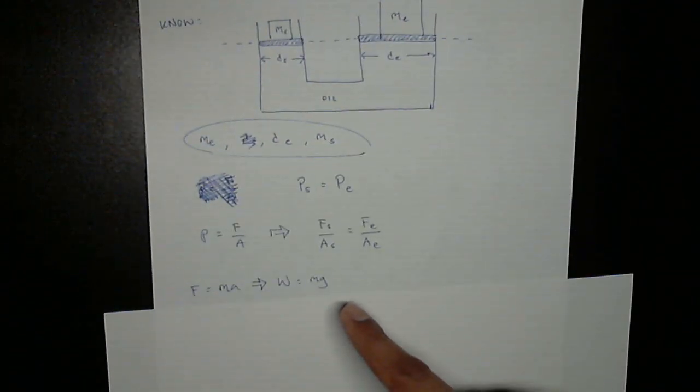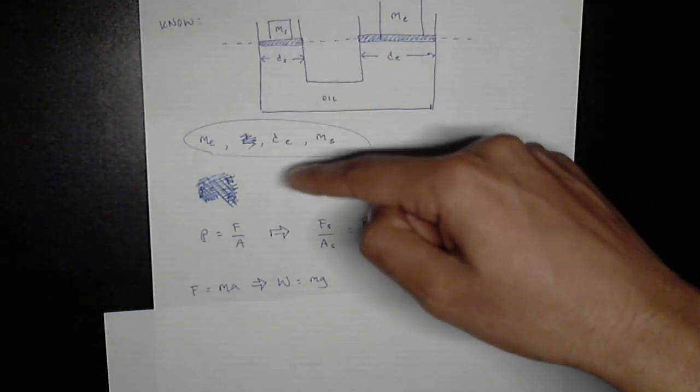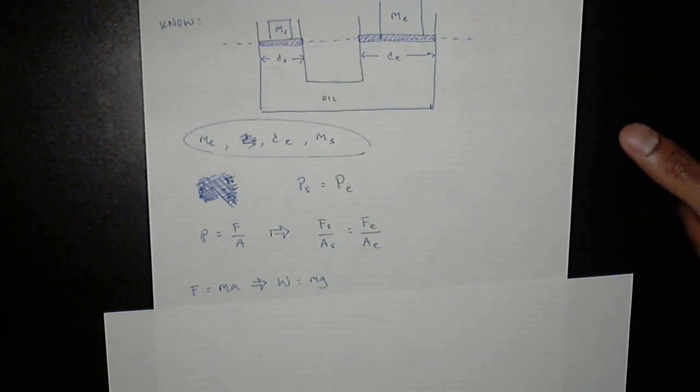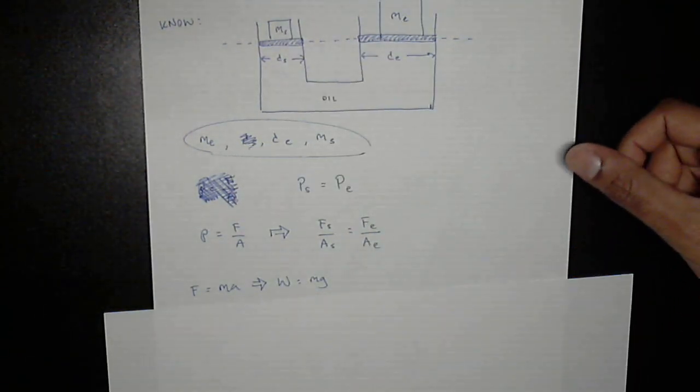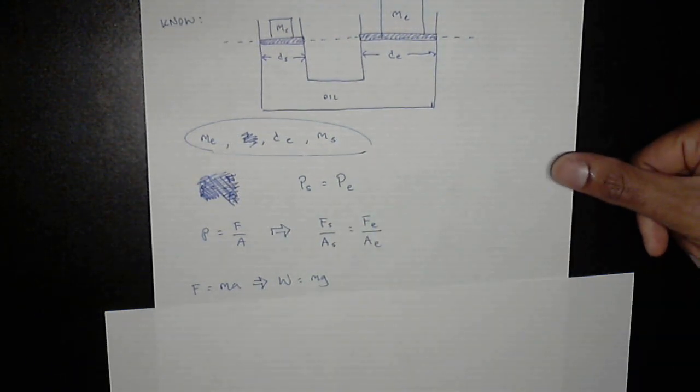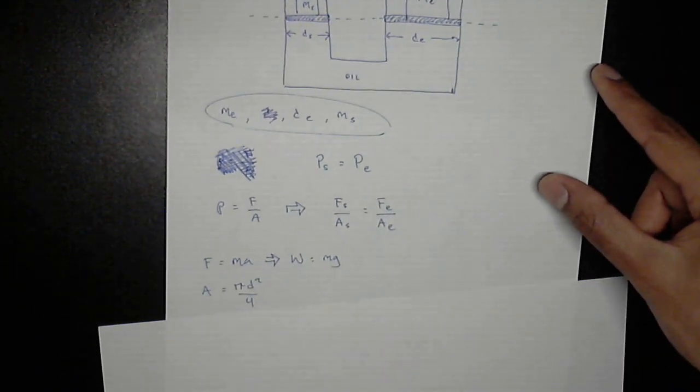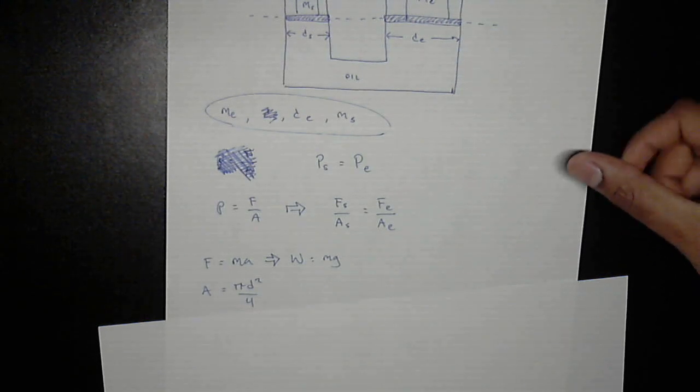We know force is equal to ma. In this case, the force is the weight force of these masses pulling down due to gravity, so weight is equal to mg. So we can replace f with mg, and we can replace a with the formula for area, which is pi d squared over 4.